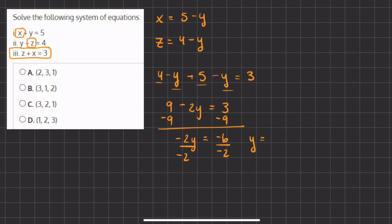So we have y equals negative 6 divided by negative 2, which gives us a positive 3 because a negative divided by a negative gives us a positive.